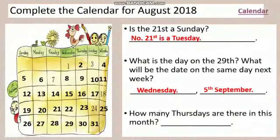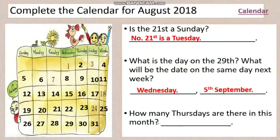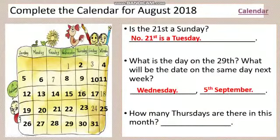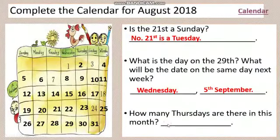How many Thursdays are there in this month? You can see: 1, 2, 3, 4, and 5. So there are five Thursdays. Your answer is five.